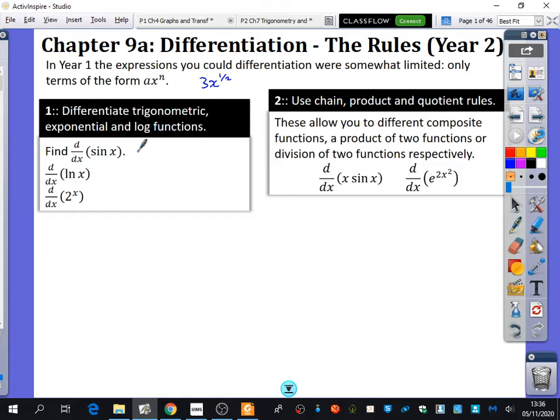We're going to learn three different rules that will help us differentiate these things, and we'll explain where these rules come from. They're called the chain rule, the product rule, and the quotient rule.